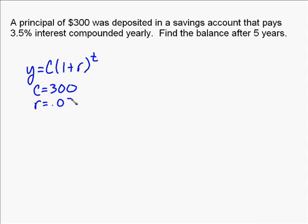The r in this formula is the rate. Now, it's a rate as a decimal and not a percentage. So you have to convert 3.5% to 0.035.